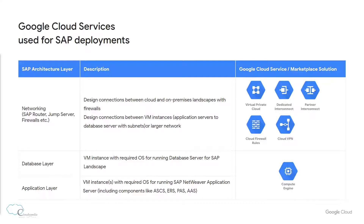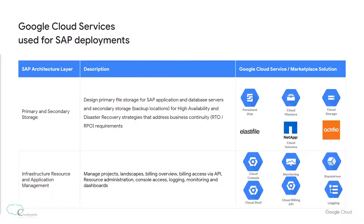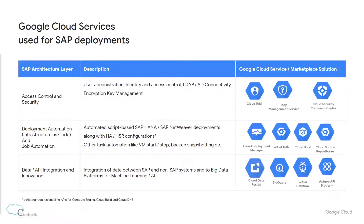For the database and application layers, Compute Engine is used to deploy VM instances for running both the database and SAP NetWeaver application servers. For primary and secondary storage, multiple services can be employed like Persistent Disk, Cloud Firestore, Cloud Storage, and marketplace solutions like Elastifile, NetApp Cloud Volumes, and Actifio. For resource management, things like projects, billing, console access, logging, and monitoring can be done using Cloud Console, Cloud Monitoring, Stackdriver, Cloud Shell, Cloud APIs like Cloud Billing API, and Cloud Logging for access control and security.